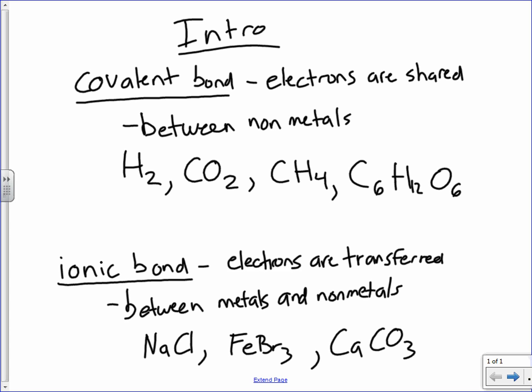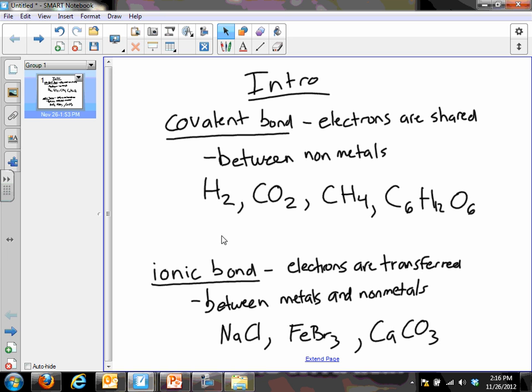So basically, one of the big things in this unit is, when you're trying to name or recognize a compound, first step, is it covalent or is it ionic? And you do this by whether it has all non-metals or if it has metals and non-metals. All right. That's basically it for the intro.